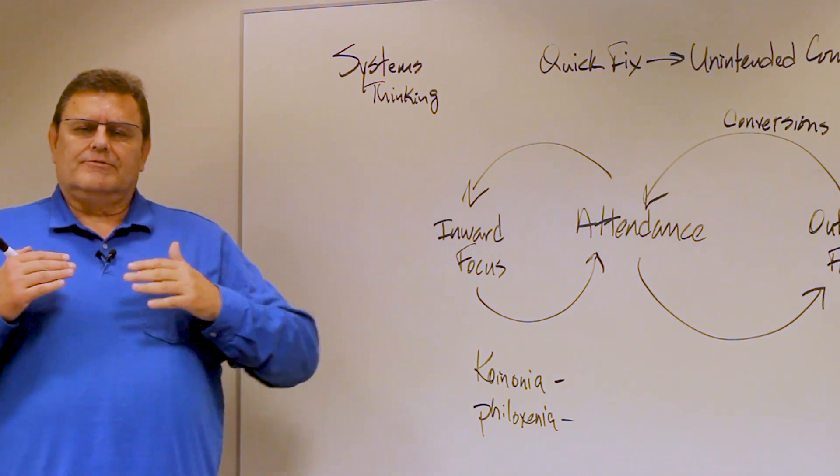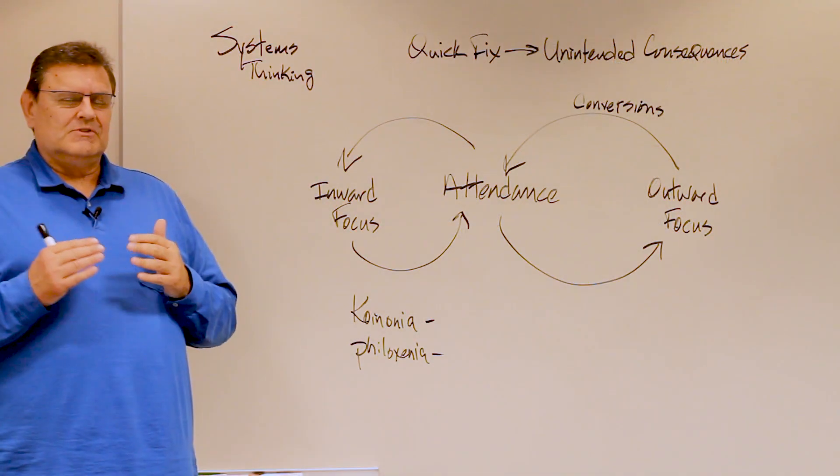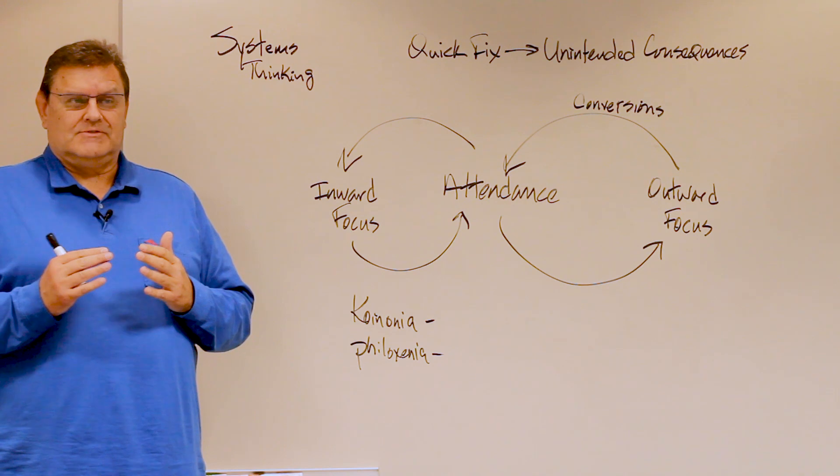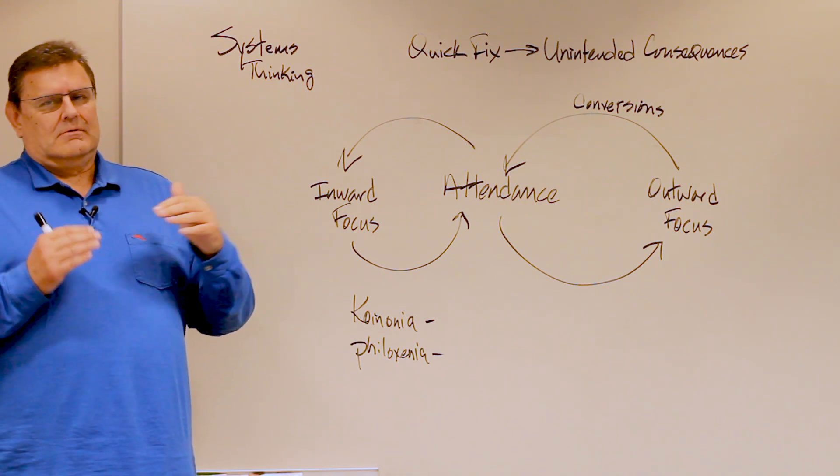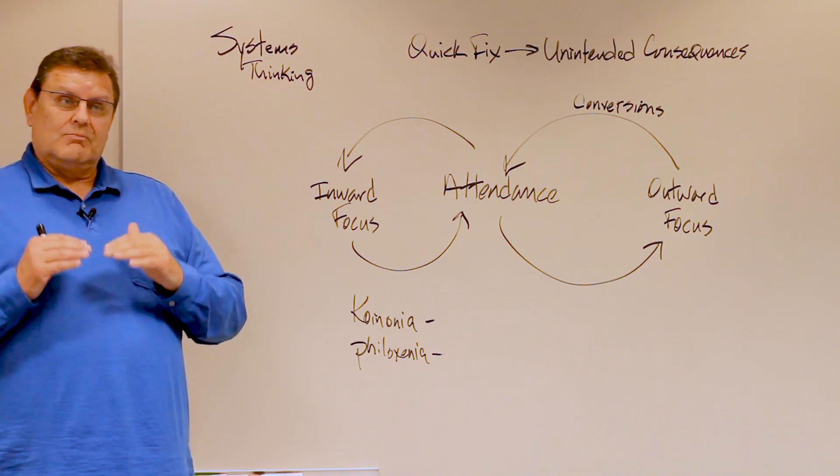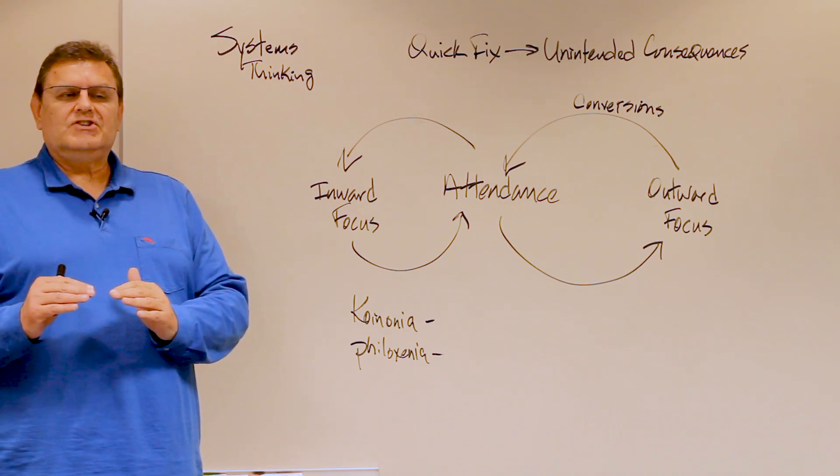Because remember, the truth is that a system is perfectly designed to produce the outcomes that you're seeing. And if the outcomes are not what you're intending, it isn't just that the events are wrong, it's that the structure is wrong and there probably are mental models that need to be changed.